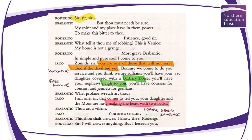Iago says, 'I am one, sir, that comes to tell you your daughter and the Moor are now making the beast with two backs' — that coarse sexual language used deliberately to be provocative. Brabantio says, 'Thou art a villain.' Iago responds, 'You are a senator.' He's mocking the rhythm of the words. Notice the difference between 'thou' and 'you' — 'thou' is more open while 'you' is more accusatory, used in anger. Coarse, prose-like language throughout.